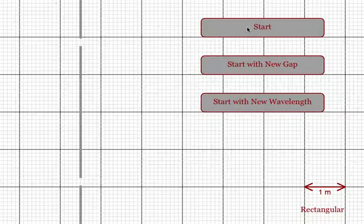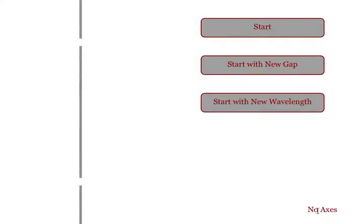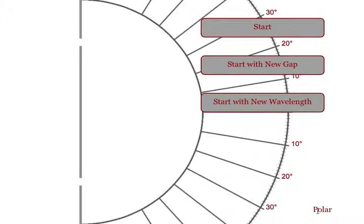They can start with the randomly generated values, they can change the size of the gap between the two openings, or they can generate a new wavelength and start the lab. They can also switch from rectangular to no-axes to polar coordinates.